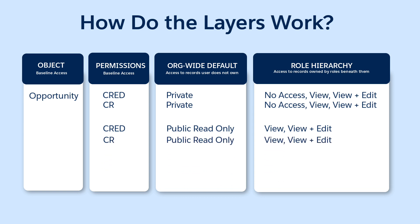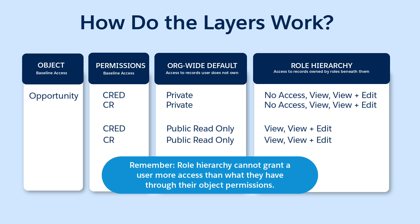The role hierarchy cannot restrict record access to less than what is granted through the org-wide defaults. If we change Alan's object permissions to have only Create and Read access, and set the org-wide defaults as public read-only, then he has read-only access to Opportunities. The org-wide defaults and the role hierarchy can't grant him Edit access. The View and Edit option is available, but doesn't apply to Alan, since he doesn't have Edit object permissions.